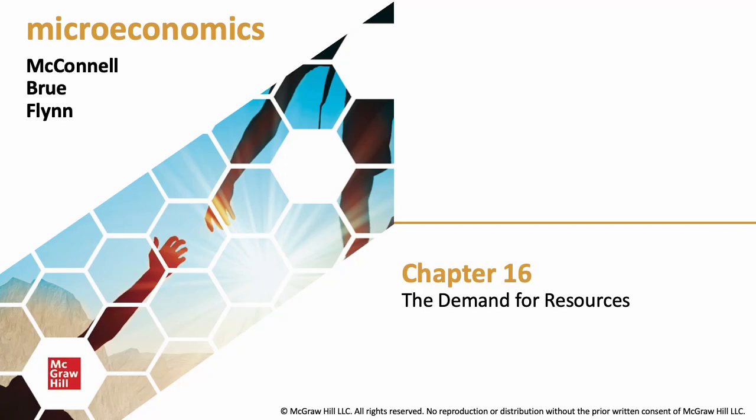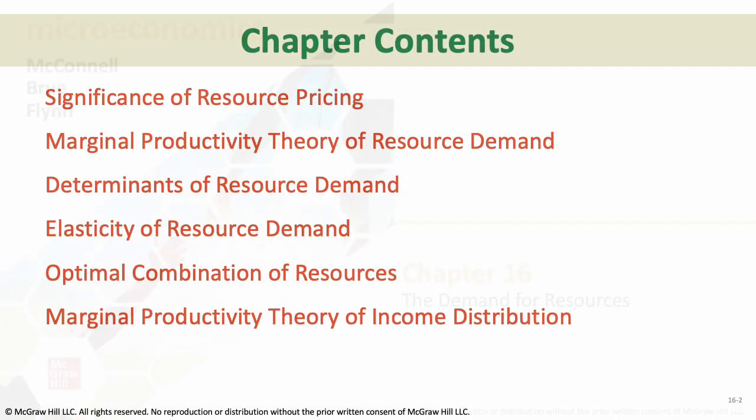Hello everybody, and now we're going to look at chapter 16 pertaining to the demand for resources. We're going to look at how resources, or the inputs we use to make things, are priced. We're going to go through the marginal productivity theory of resource demand, the determinants of that demand, how elastic it is, the optimal combination of resources, and the marginal productivity theory of income distribution.